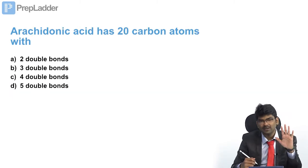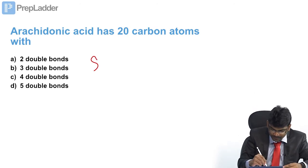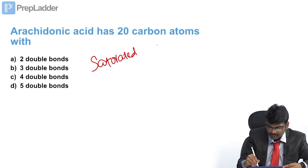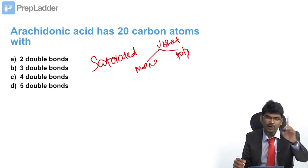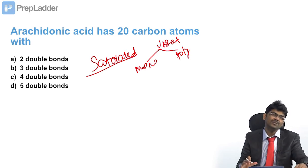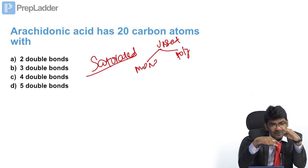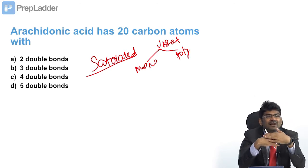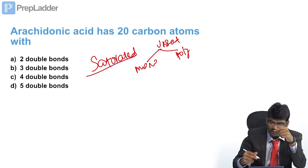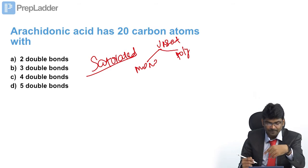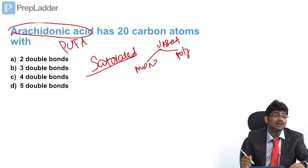Arachidonic acid has 20 carbon atoms. They are asking how many double bonds it has. Fatty acids can be either saturated or unsaturated. Unsaturated can be mono-unsaturated or polyunsaturated (PUFA). Mono-unsaturated means just one double bond. Saturated means all carbons are saturated with hydrogen. In unsaturation, a double bond replaces hydrogen. Mono-unsaturated means a single double bond; polyunsaturated means more than one double bond. Obviously arachidonic acid is a PUFA. The question is: how many double bonds?